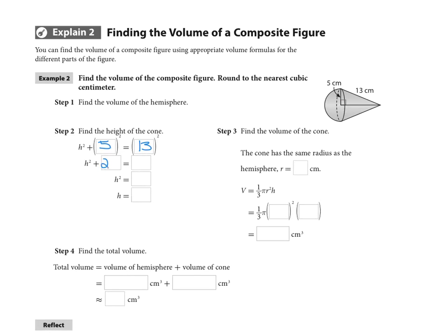So that's h squared plus 25 equals 169. And then doing some subtraction, h squared is 144 and h is 12. So that is going to give us the height of the cone, then we're going to use that height to find the volume of the cone.